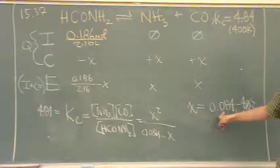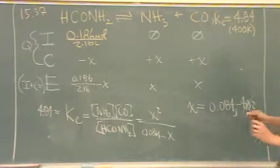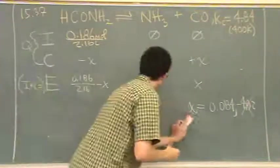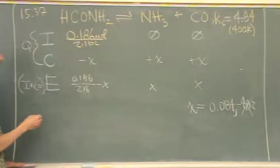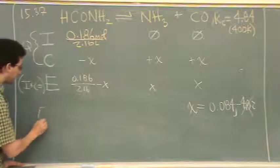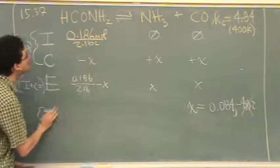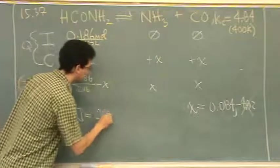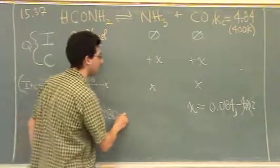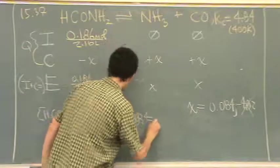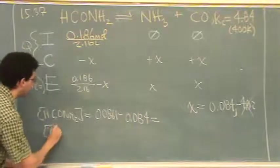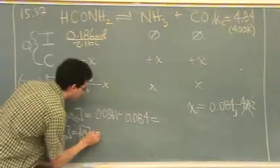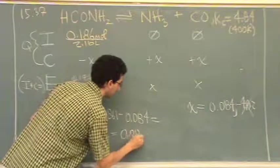Okay, so this is x just to finish the problem. So that's x. This is these two concentrations. So I'm going to erase this part for a minute, or completely, forever. So, concentration of H and, oh, HCONH2 is going to be the 0.0861 minus 0.084, and then the concentration of NH3 is going to equal the concentration of CO, which is equal to x, which is equal to 0.084.